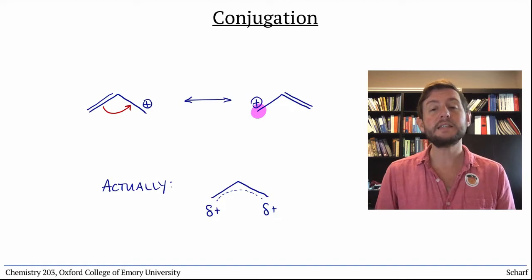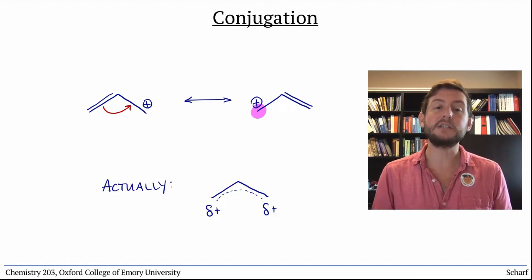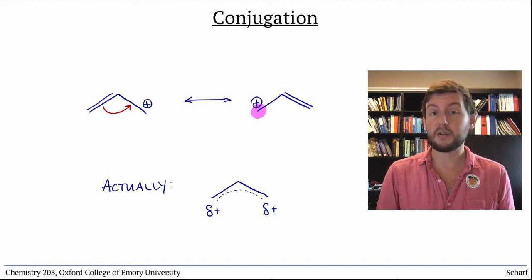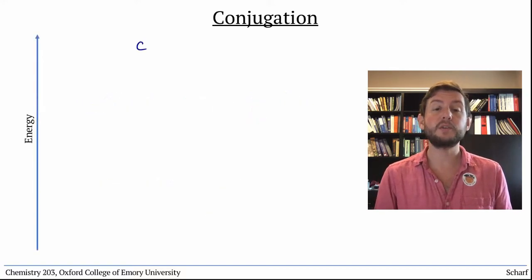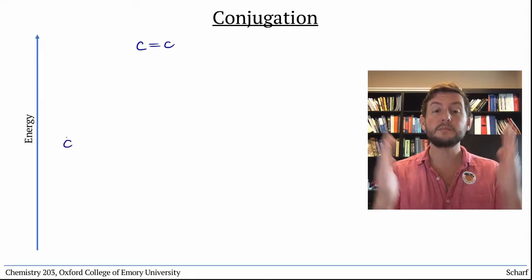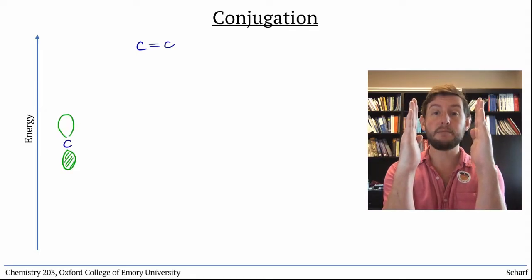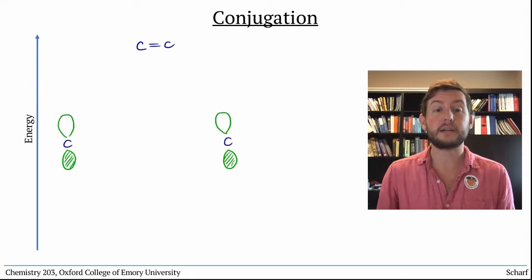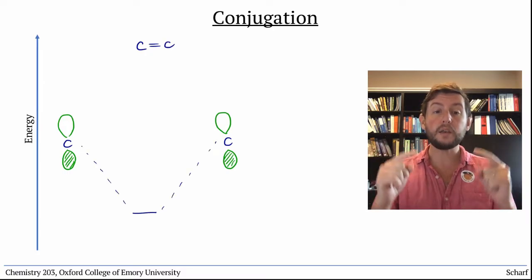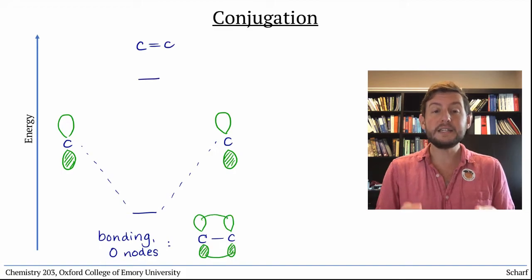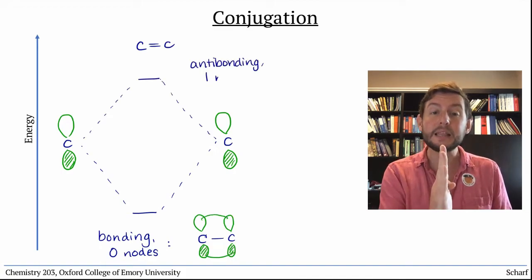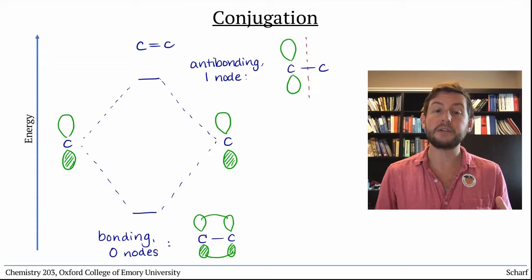To understand this, let's make some analogies to regular pi-bonds, which we already understand pretty well. A pi-bond between two carbon atoms comes from the side-to-side overlap of p-orbitals on each atom, making one new orbital that's lower in energy, a bonding orbital, and one orbital that has an additional node right in the middle of the pi-bond. It's higher in energy.